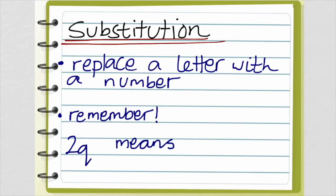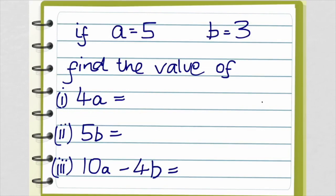The next aspect we're going to look at is substitution. This is when we replace a letter with a number. And remember, 2q means 2 multiplied by q — that's going to be very important. So substitution is when you replace the letter with a number and then find the value of what you have.